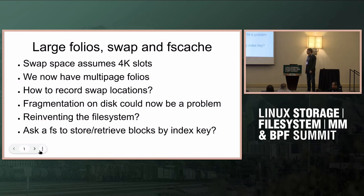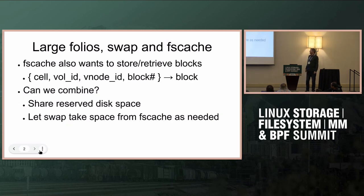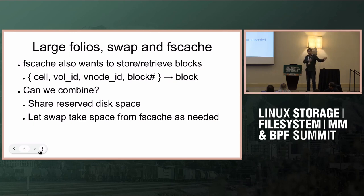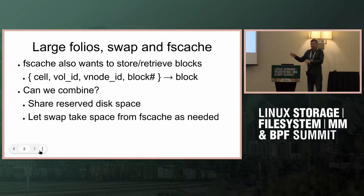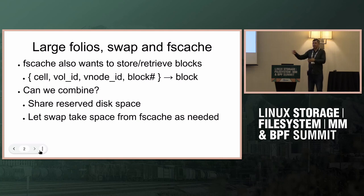Or, can we cancel the data because we don't want it back — say the process died. This led on to further thought, as I maintain local disk caching for network file systems, and that also wants a similar sort of thing. We have a handle representing a particular file on the server and a particular block in that file, and I want to be able to store that in the local cache on disk. But we have two reserved caches now: one for swap spaces and one for fscache, and we're accessing them in the same sort of way. Can we actually join those together?